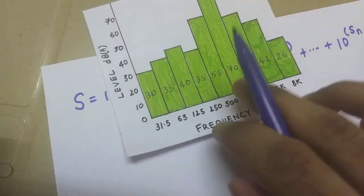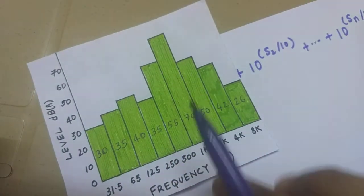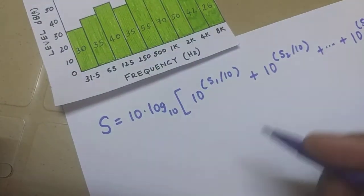So now what we're going to do is we're going to use this equation and we're going to calculate the overall noise level for this particular spectral information. Alright, so let's get started.